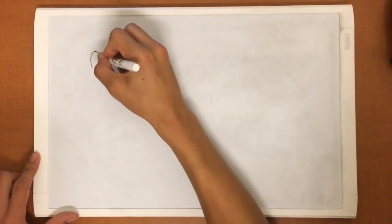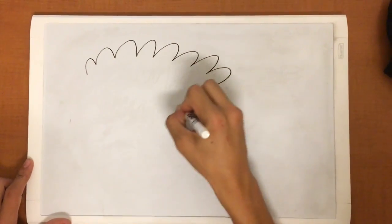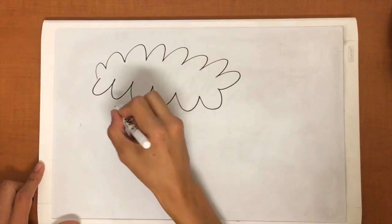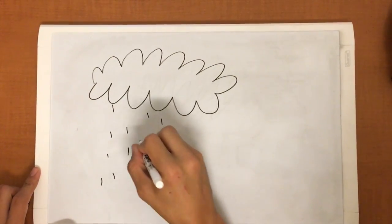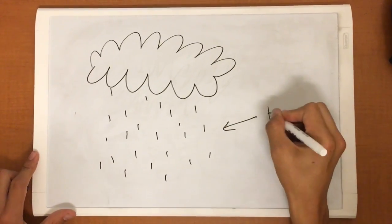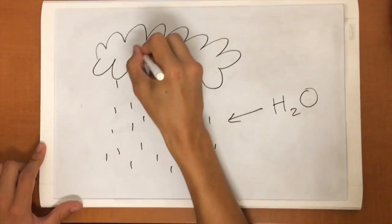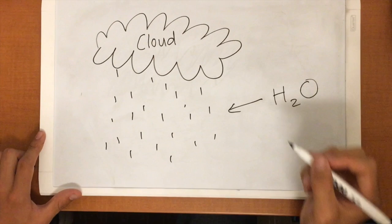Precipitation is water released from clouds in the form of rain, freezing rain, snow, sleet, or hail. Most precipitation falls as rain. In this diagram, a cloud with water vapor is precipitated and turns into rain which falls towards the ground.